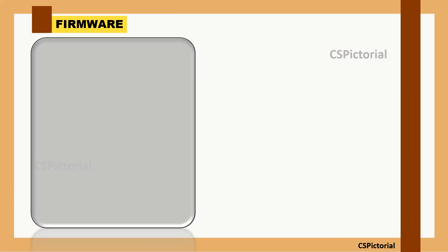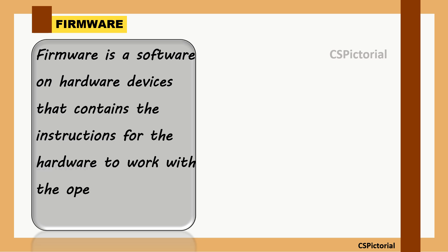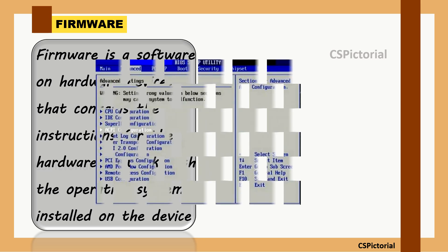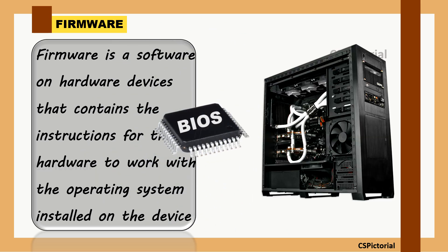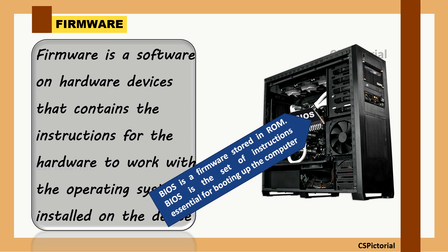Firmware is software embedded in hardware devices that contains instructions for the hardware to work with the operating system. It is essential for devices to start up, perform basic operations, and communicate with other hardware. Common examples include the BIOS in a computer and the software in your smartphone, printer, or router. Firmware is also embedded in modern day-to-day appliances like washing machines and refrigerators. BIOS is a firmware stored in ROM (read-only memory), mounted on the motherboard, and provides the instructions essential for booting up the computer.